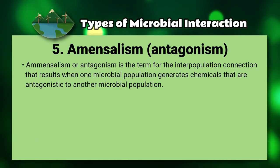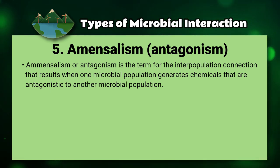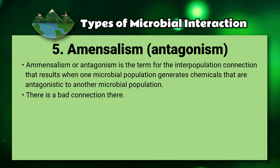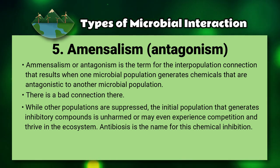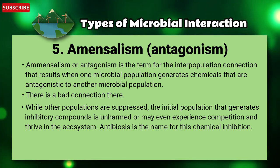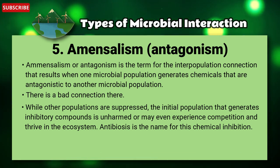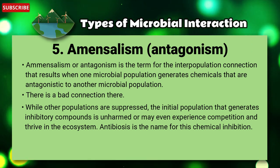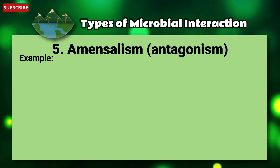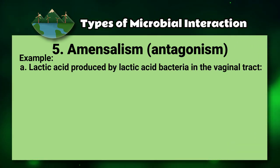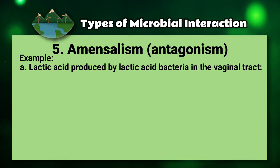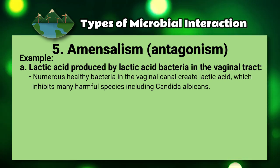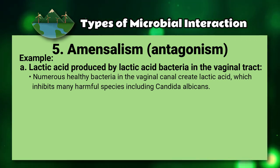Number five: amensalism, also known as antagonism. Amensalism is a term for the inter-population connection that occurs when one microbial population generates chemicals that are antagonistic to another microbial population. While other populations are suppressed, the initial population that generates inhibitory compounds is unharmed. This chemical inhibition is also called antibiosis. One example is lactic acid produced by lactic acid bacteria in the vaginal tract, which inhibits many harmful species including Candida albicans.